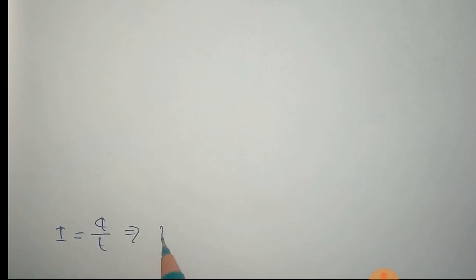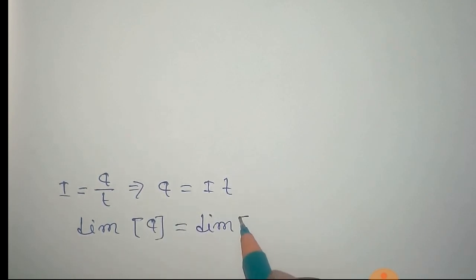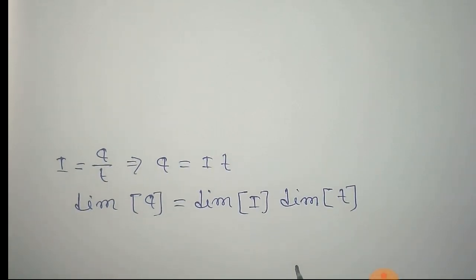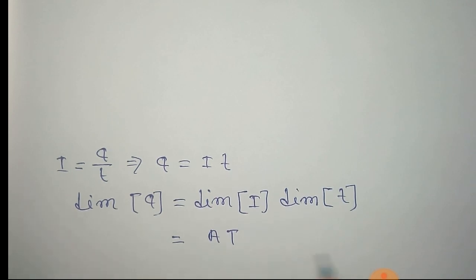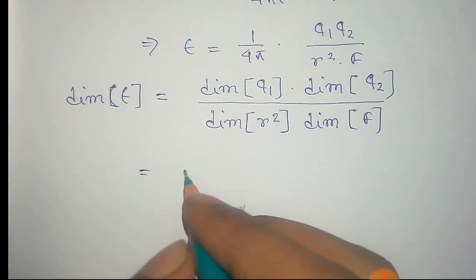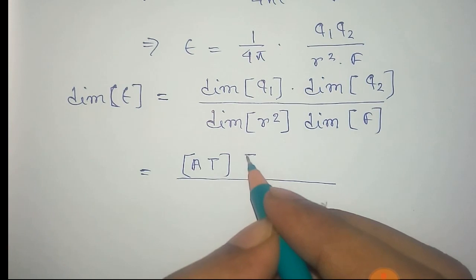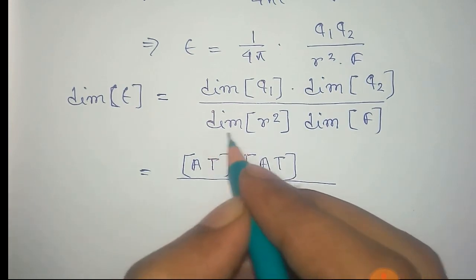Now first of all we have to find the dimension of q1, that is charge. We know that current equals q by t, that is charge by time, and from this charge equals current into time. The dimension of charge is equal to dimension of current, that is I, into dimension of time, that is T. The dimension of current is ampere and dimension of T is time T, so that is A into T — the dimension of charge. So dimension of q1 is AT and dimension of q2 would also be AT.